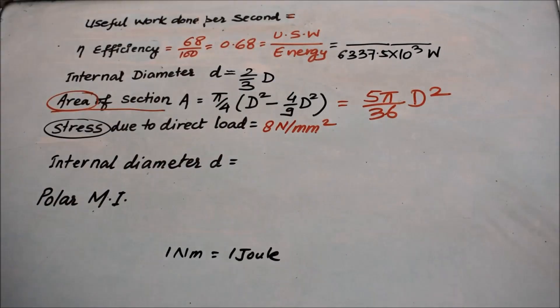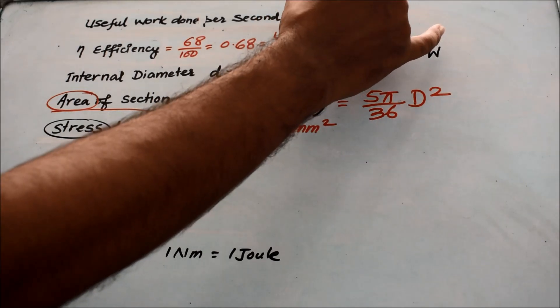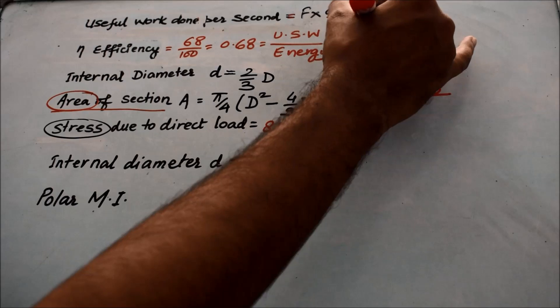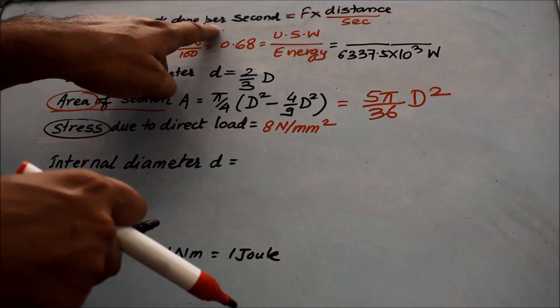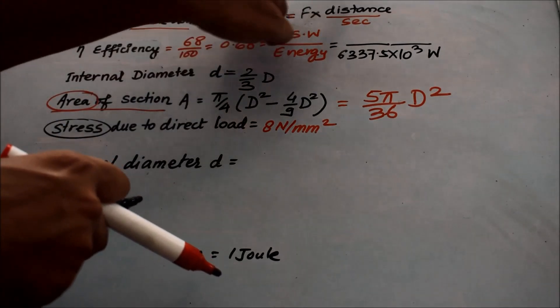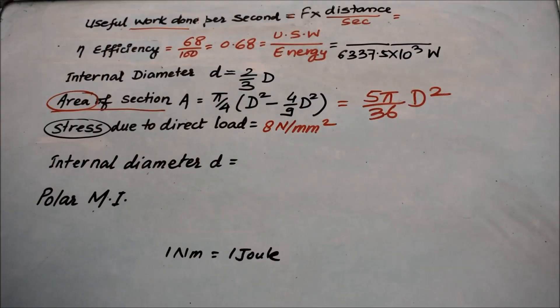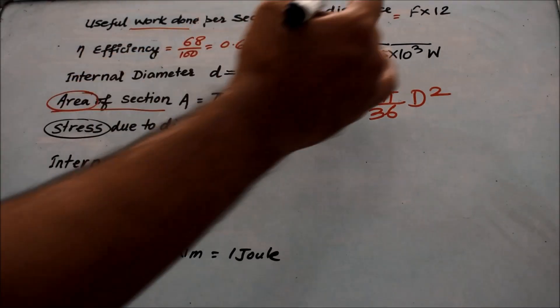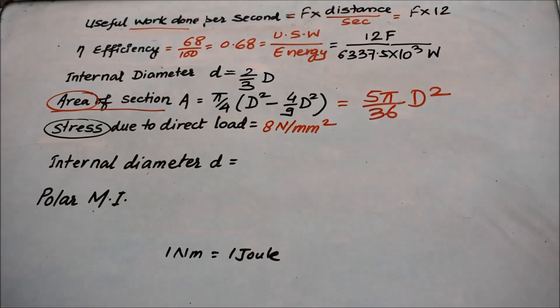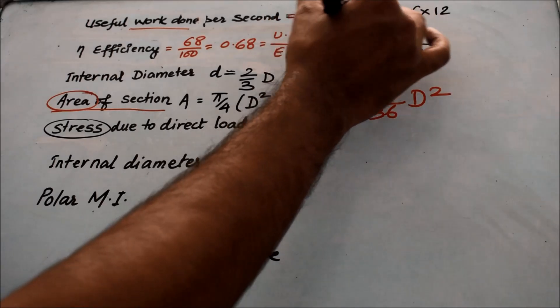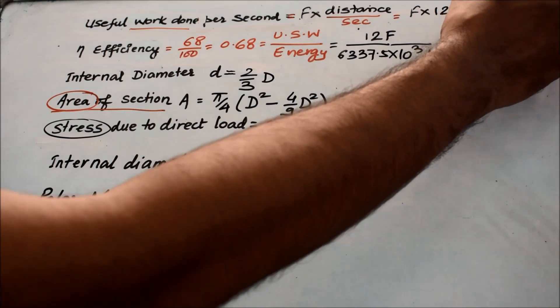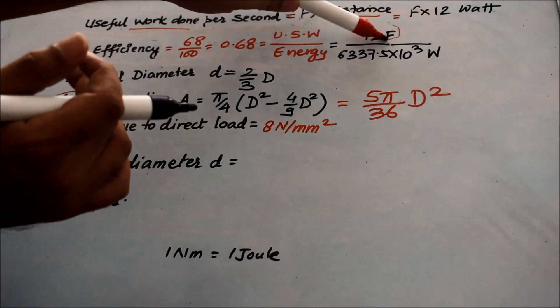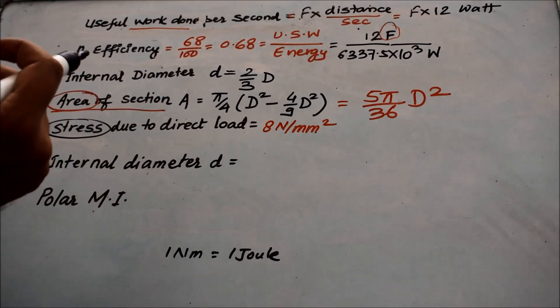Now coming to this useful work done per second. If you have to calculate the value of work done, you have to do force multiplied by distance. The distance per second is mentioned in the question, the value is 12 meter per second, so I can write F multiplied by 12 meter per second. This is Newton meter per second, which can be directly written as watt. Only one unknown is there: the value of F can now be calculated very easily. The value of F will be 359,125 Newton.